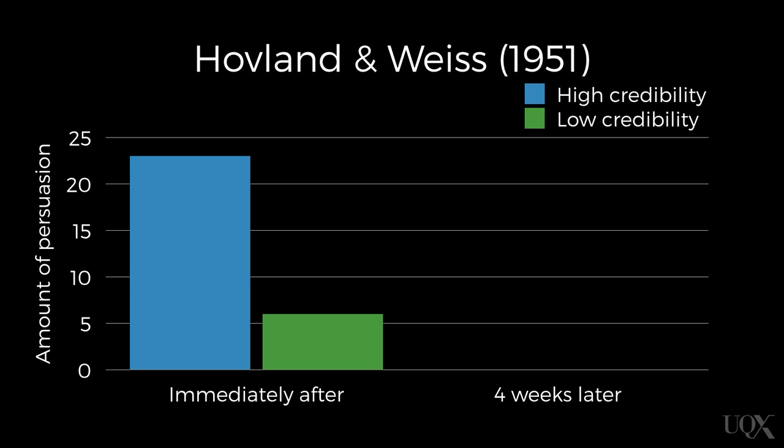You will notice that, in line with what Hovland and Weiss expected, immediately after the persuasive message was presented, participants were more persuaded by the communicator who was higher in credibility compared to the communicator who was lower in credibility.